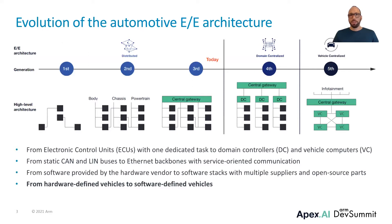Here you see the evolution of the automotive EE architecture. EE stands for electrical and electronic, and reflects the hardware-oriented view the automotive industry had in the past. Over the last decades, there has been an evolution from electronic control units with one dedicated task to high-performance domain controllers and vehicle computers, on which many different software functions are integrated.